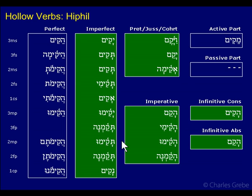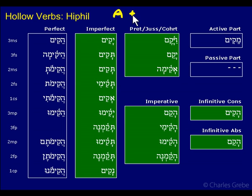With all these prefix forms, and with some of the perfect forms and the participle, you have the i-class theme vowel. Remember, in the strong verbs, the key to the Hiphil — at least the Hiphil imperfect onward — is a prefix vowel plus i-class theme vowel. So we have Hiphil here. Some sort of i-e vowel like tsere or segol — this is reduced here, obviously — but we have it because it's a Hiphil.